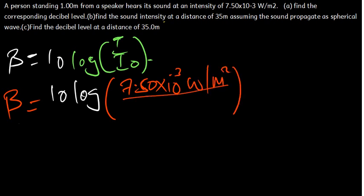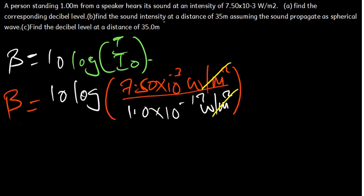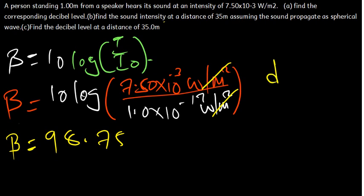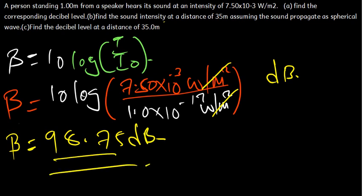We have I₀ which is constant at 1.0 times 10 raised to the power negative 12 watts per square meter. The watts per square meter units cancel. Plugging into the calculator: 10 times log of (7.50×10⁻³ divided by 1.0×10⁻¹²). The answer is 98.75 dB — this is our answer for Part A.